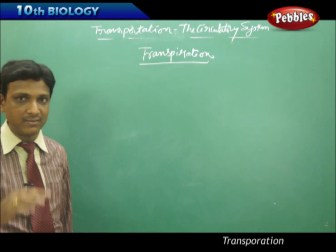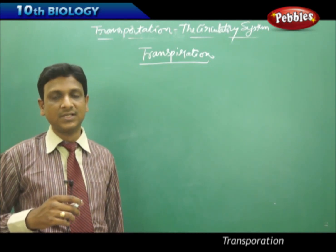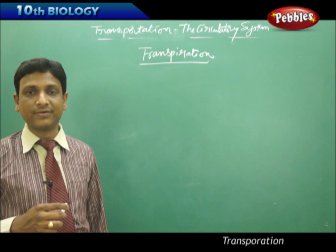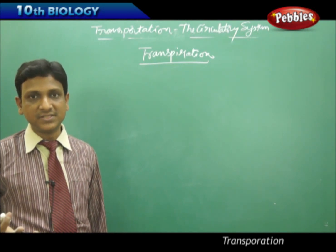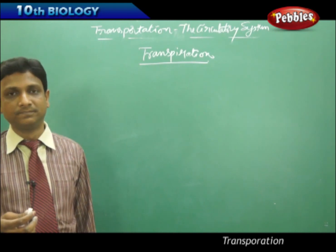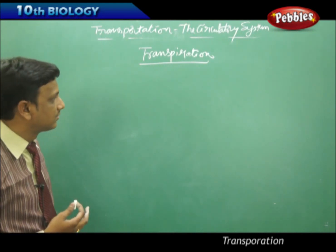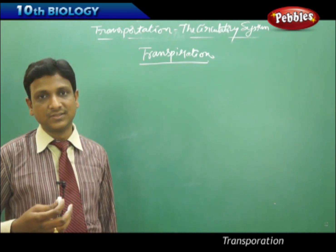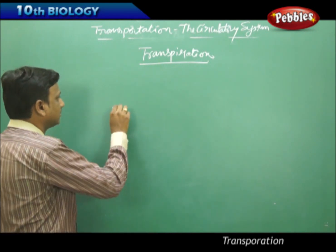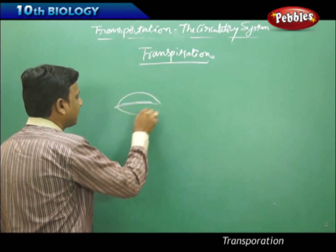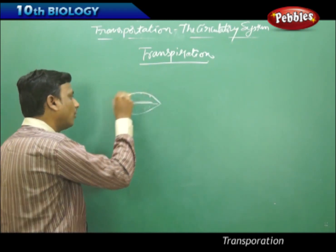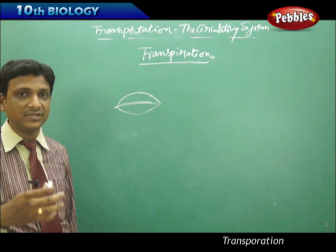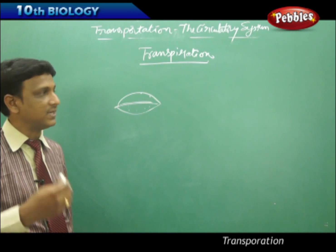The other mechanism is the transpiration process. Transpiration is the evaporation of water that takes place through the leaves of a plant. Evaporation is the conversion of water into water vapor. The surface of the leaf has holes called stomata, through which exchange of gases takes place, and through which evaporation — or transpiration — also occurs.